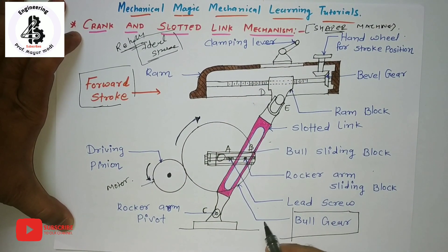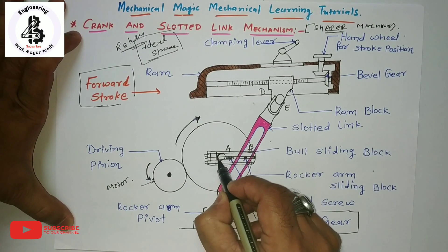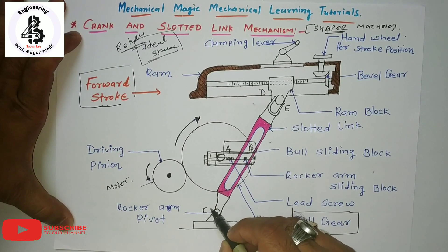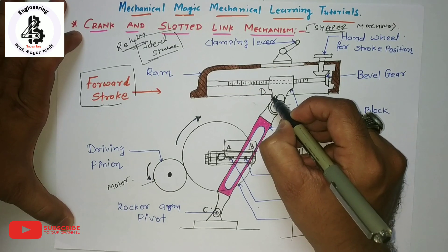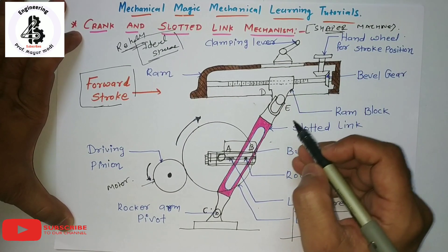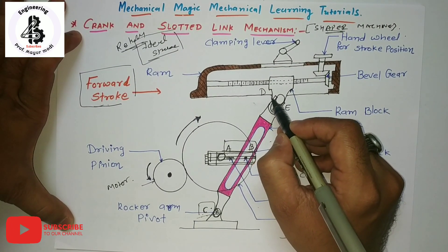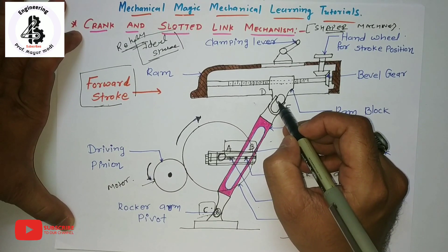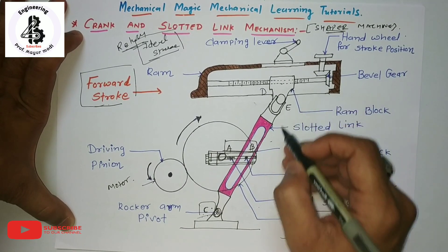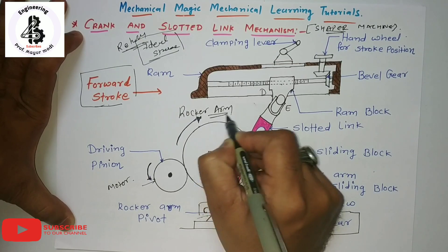The center of the bull gear is also connected with a link — the A to B link. Here, C to D is another slotted link, hinged at point C, and D is connected to the ram. This is the construction of the crank and slotted link mechanism. The slotted link is also known as a rocker arm.